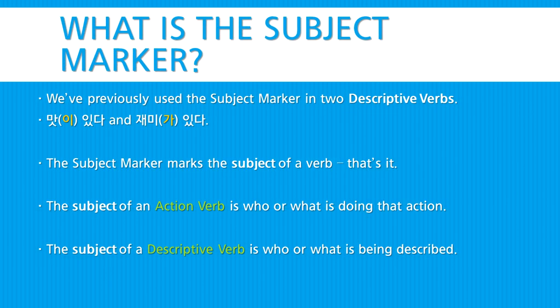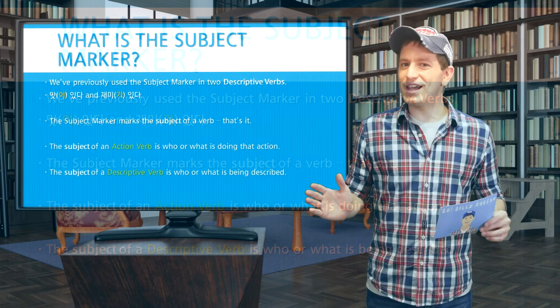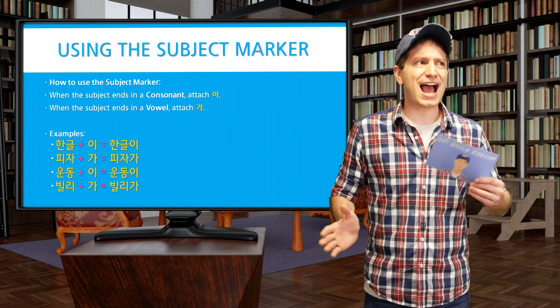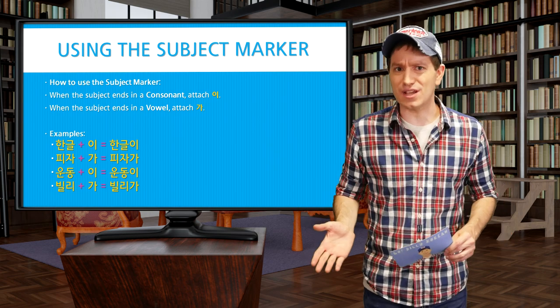For example, the subject of an action verb is who or what is doing that action. And the subject of the descriptive verb, since there's no action, is who or what is being described by that descriptive verb. So before we go into any more detail, let's just talk about how to use the subject marker.